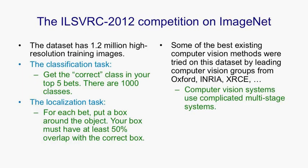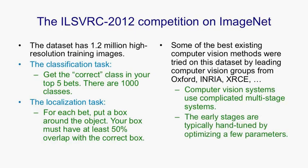The computer vision systems typically use complicated, multi-stage systems. The early stages are typically hand-tuned by optimising a few parameters using some of the data, and the top stage is always a learning algorithm. But they don't learn all the way through the way a deep neural net does when trained with backpropagation — they don't have end-to-end learning, where parameters in early feature detectors are influenced by their usefulness for making final class decisions.